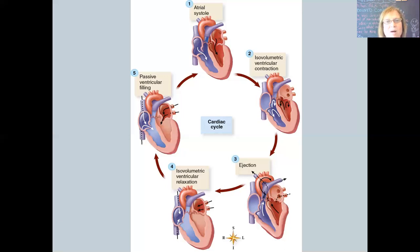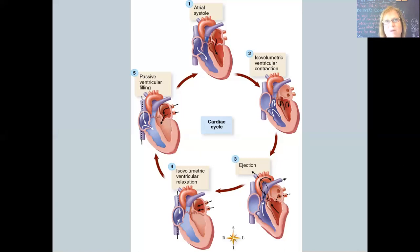Looking at diagram number one, we see atrial systole. Blood has moved into and filled both the right and left atria. Before the atria actually contract, we have passive filling of the ventricles — as the atria begin to fill, the ventricles are filling as well. Much of the blood moving into the atria passively moves into the ventricles, so we have passive ventricular filling prior to atrial systole.